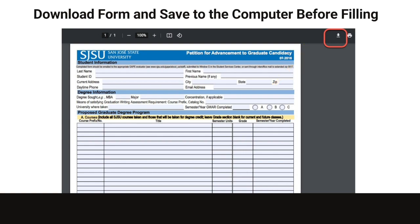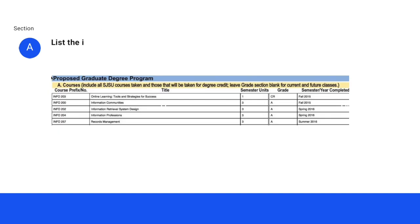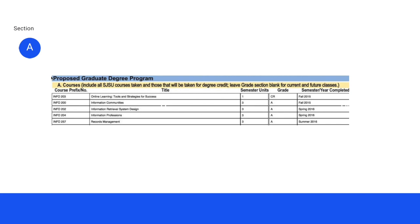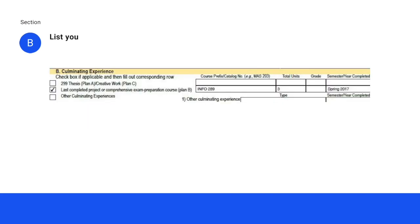In Section A, list the iSchool courses that you have taken or plan to take in order. Leave grades blank for those courses that you have not received a grade. In Section B, list your culminating experience. Do not list this class in Section A.